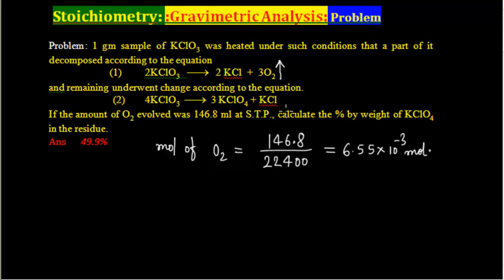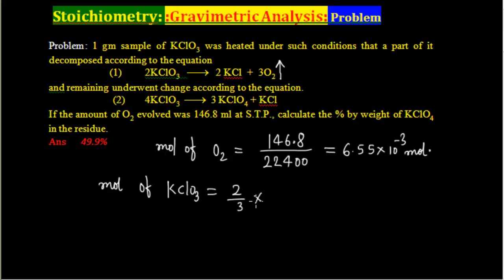Now that we know the moles of O₂, we can calculate moles of KClO₃ used in the first reaction. In reaction 1, 2 moles of KClO₃ produce 3 moles of O₂, so moles of KClO₃ = 2/3 × 6.55 × 10⁻³ mol.